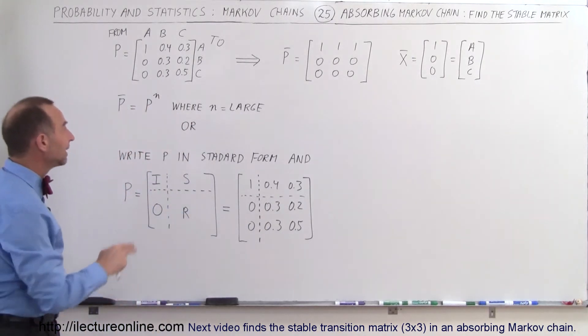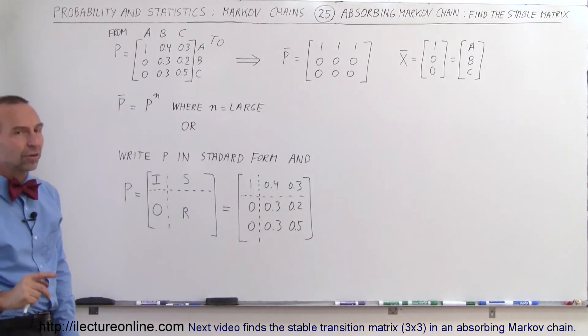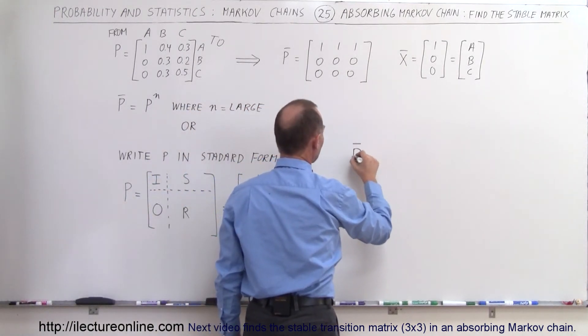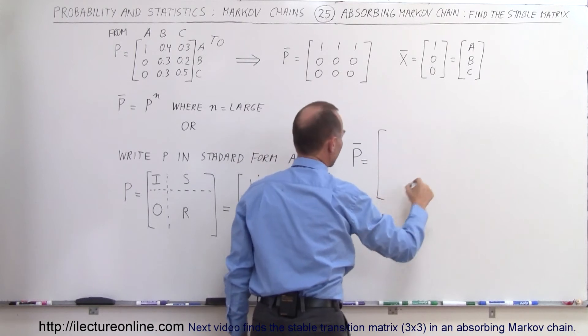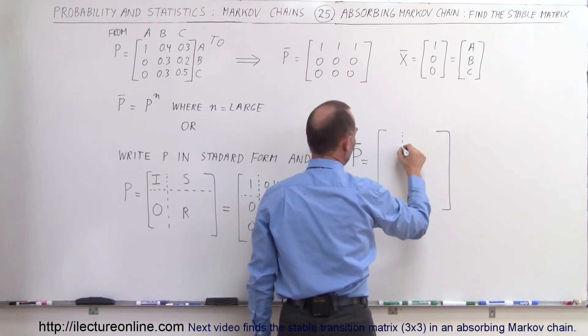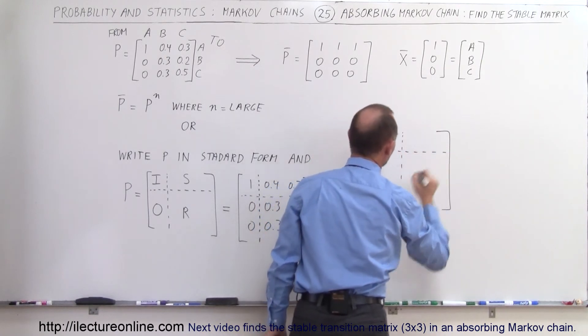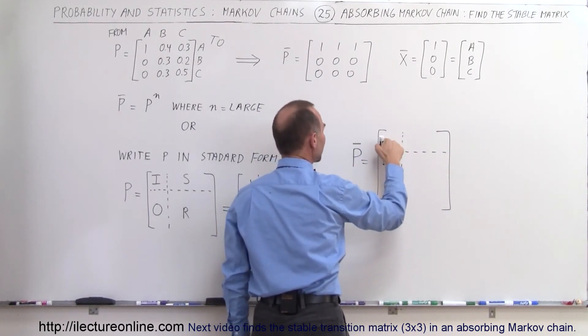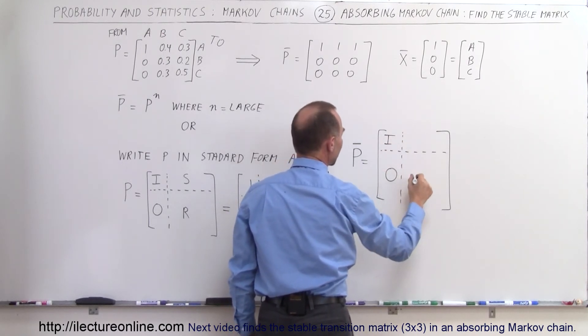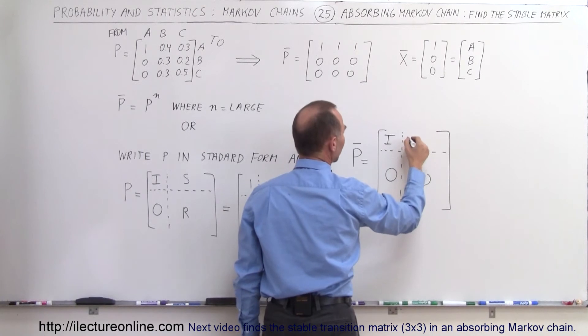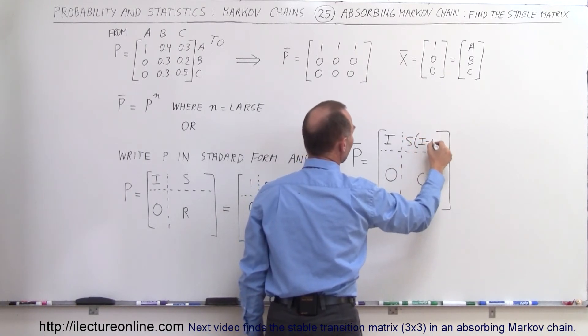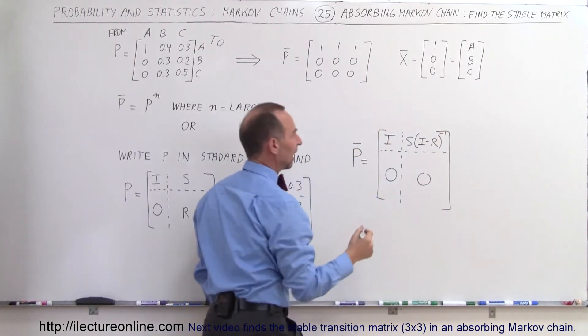Now how do we find the stable transition matrix? Well we find the stable transition matrix by saying that P-bar is equal to—notice this here again we have to delineate it like this and delineate it like that. So what we're going to get here is the identity matrix, here we get the zero matrix, here we'll get the zero matrix, and over here we get the matrix where we get S multiplied times identity matrix minus the R matrix and take the inverse of that.